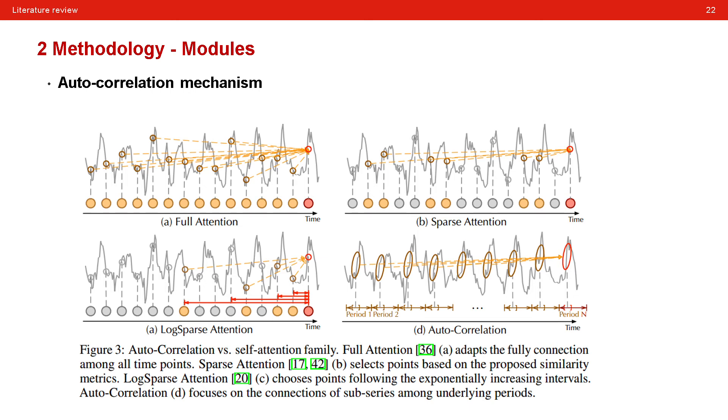In summary, here is the comparison between auto-correlation mechanism and the previous attention model. Intuitively, for the full attention model, they adapt the full connection among all time points. So, they have to compute n squared. The time complexity will be n squared. And for the sparse attention, they select the points based on the exponentially increasing intervals. And for the proposed auto-correlation, they suggest a connection of sub-series among underlying periods. In this way, they can not only reduce the computation of the attention scheme, but also exploit the historical information to a great extent.